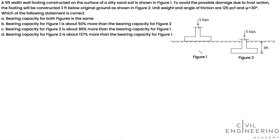We have two situations here. Originally, the wall footing was designed sitting on top of the ground surface. To avoid possible damage, we lower the footing by three feet, giving a three-foot embedment above the bottom of the footing. We're trying to determine the difference in bearing capacity between these two situations.